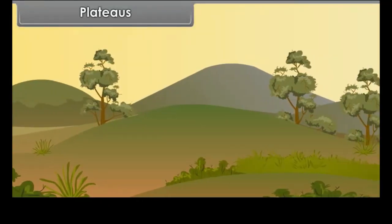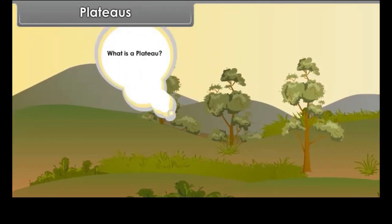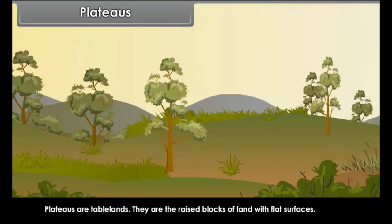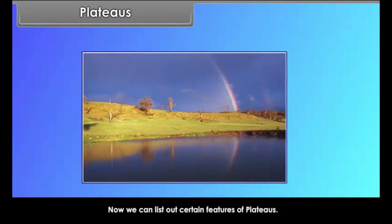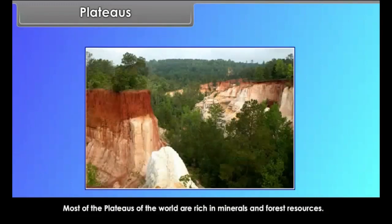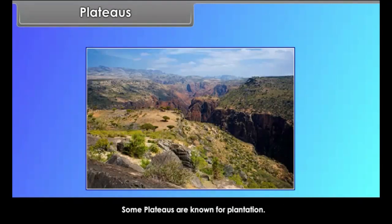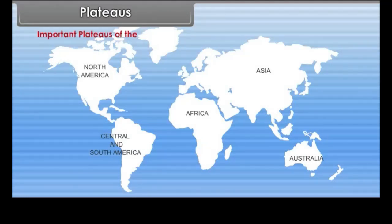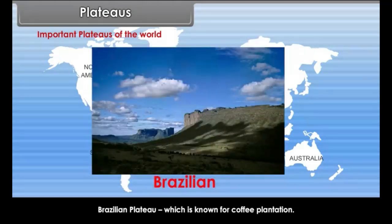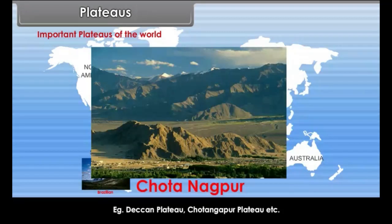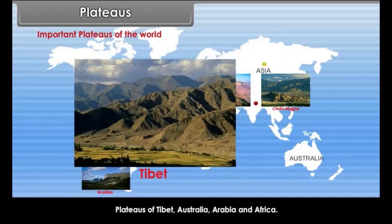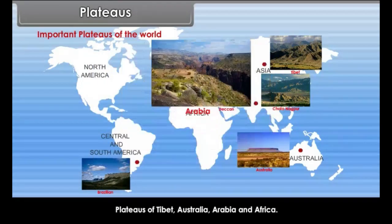The next type of landform is plateaus. Plateaus are tablelands — raised blocks of land with flat surfaces. Most of the plateaus of the world are rich in minerals and forest resources. Some plateaus are known for plantation. The Brazilian Plateau is known for coffee plantation. Indian plateaus are rich in mineral resources, for example the Deccan Plateau and Chota Nagpur Plateau. Other important plateaus include those of Tibet, Australia, Arabia, and Africa.